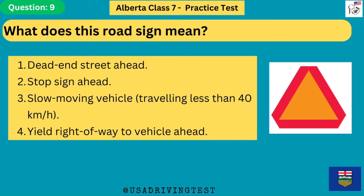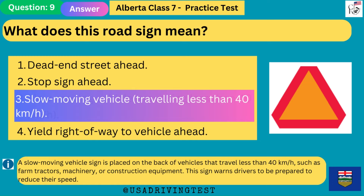What does this road sign mean? 1. Dead end street ahead. 2. Stop sign ahead. 3. Slow moving vehicle, traveling less than 40 kilometers per hour. 4. Yield right-of-way to vehicle ahead. The answer is 3: slow moving vehicle, traveling less than 40 kilometers per hour. A slow moving vehicle sign is placed on the back of vehicles that travel less than 40 km/h, such as farm tractors, machinery, or construction equipment. This sign warns drivers to be prepared to reduce their speed.